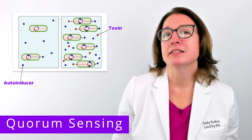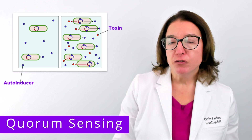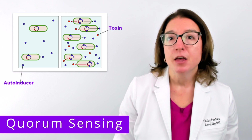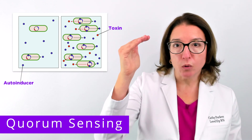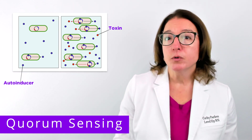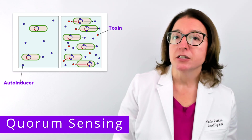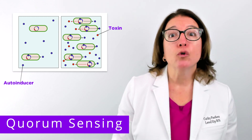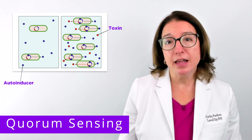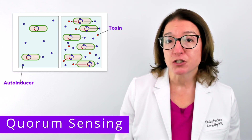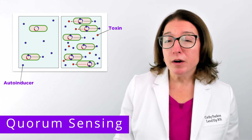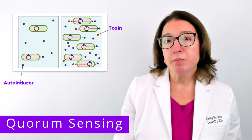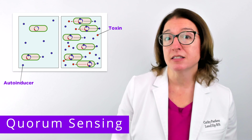Here is basically how quorum sensing works. Bacteria in the biofilm produce small molecules called autoinducers, shown as blue circles in the image. When the bacterial population reaches a certain threshold — called a quorum — those autoinducers bind to receptors in the bacterial cells. This binding triggers the transcription of genes that code for virulence factors, such as toxins or exoenzymes, shown as red circles in the image. The bottom line is that quorum sensing allows bacteria to only synthesize virulence factors when the population is large enough to overcome the immune defenses of the host.